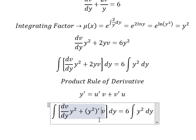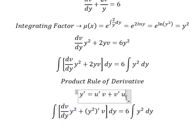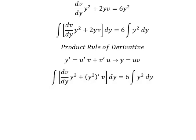So if we do this integral, we have y equals to uv. The integral of this one, we have y square v. The integral of y square, we have y to the power of 3 over 3, and we put c.